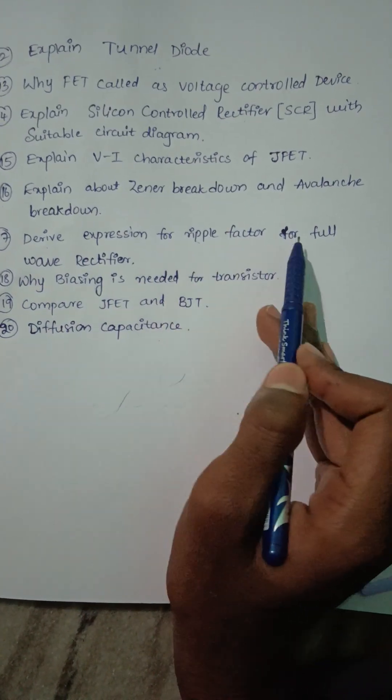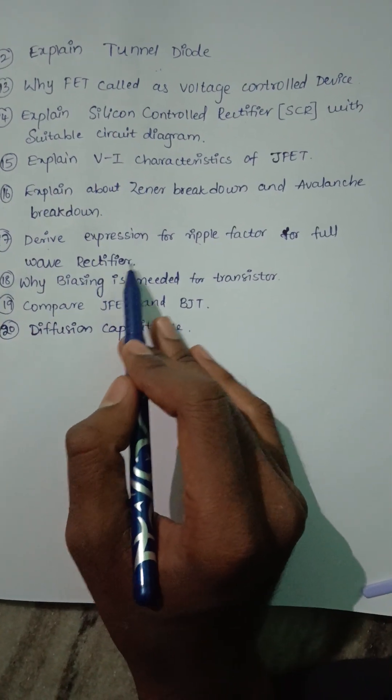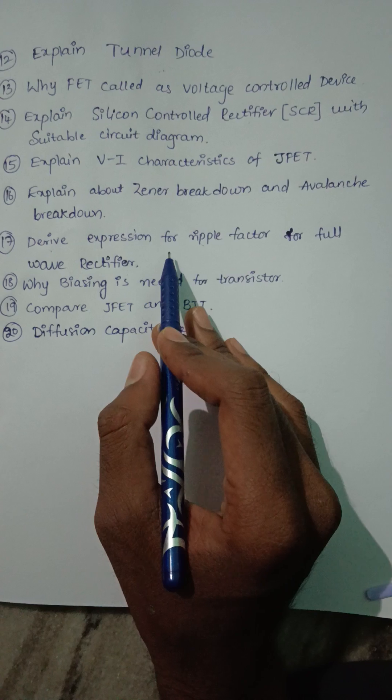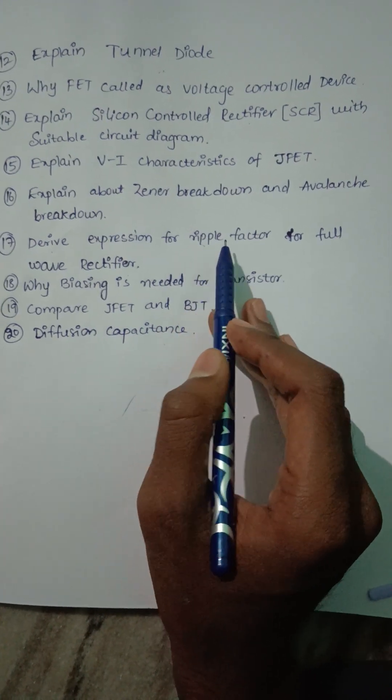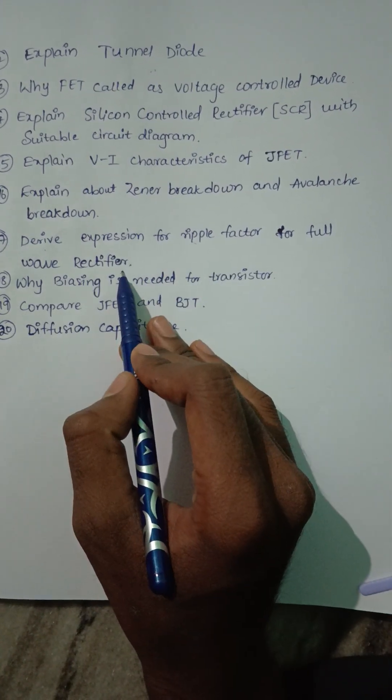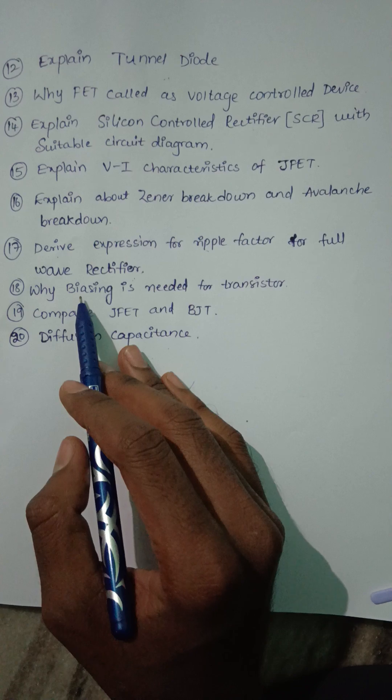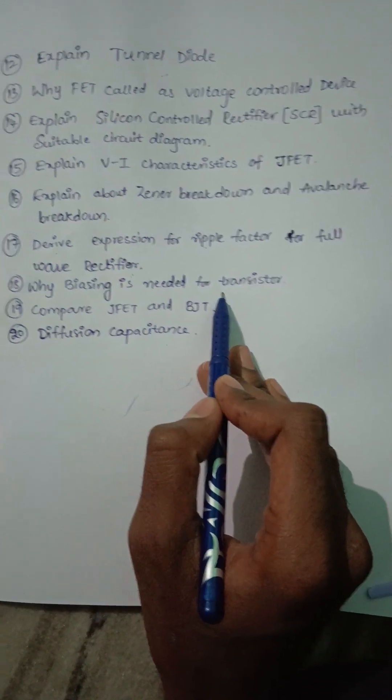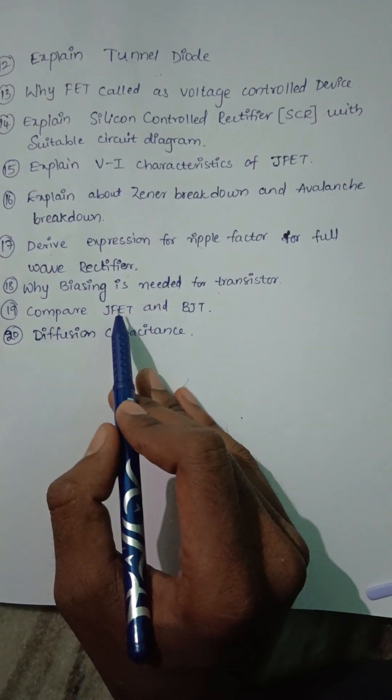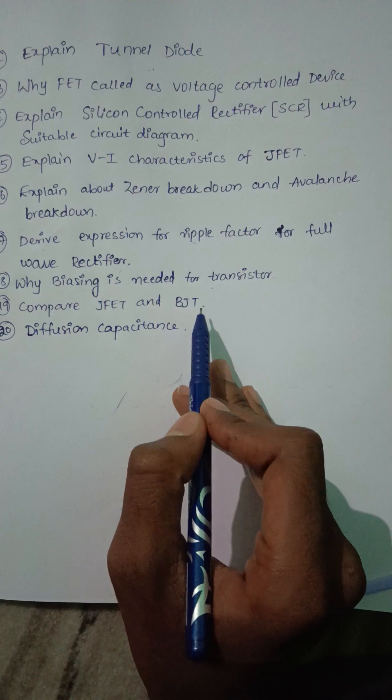Derive expression for ripple factor for full wave rectifier. Here we have to derive the ripple factor calculation. Then why biasing is needed for the transistor, and comparison of JFET and BJT.